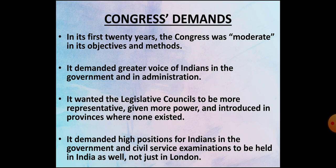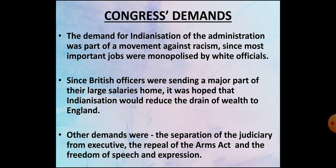In its early years, Congress objectives and methods were moderate. Congress members wanted gradual reforms. They demanded more Indians to be involved in government and administration. They asked that the legislative councils should have more Indian representation, and that those representatives should also have a say in decisions concerning India. They demanded the introduction of legislative councils in those provinces where none existed. The Congress leaders also demanded high positions for Indians in the government, and for this, Congress demanded that the civil service examination be held in India and not just in London.